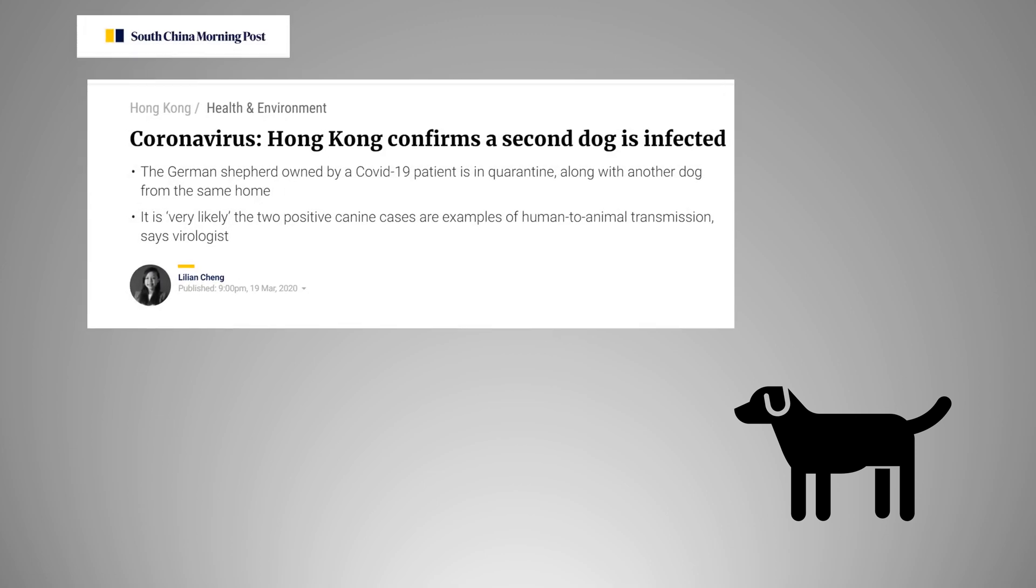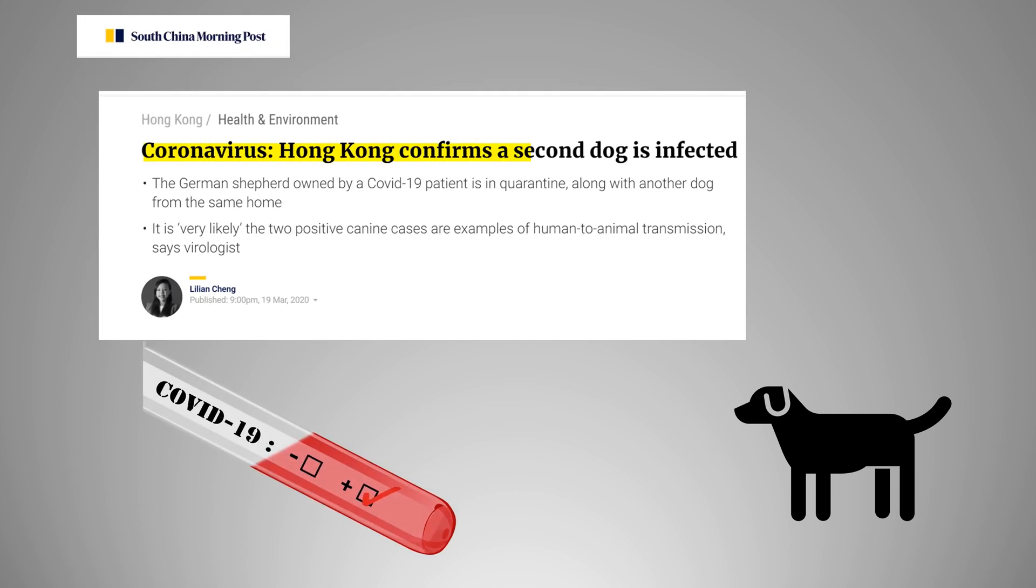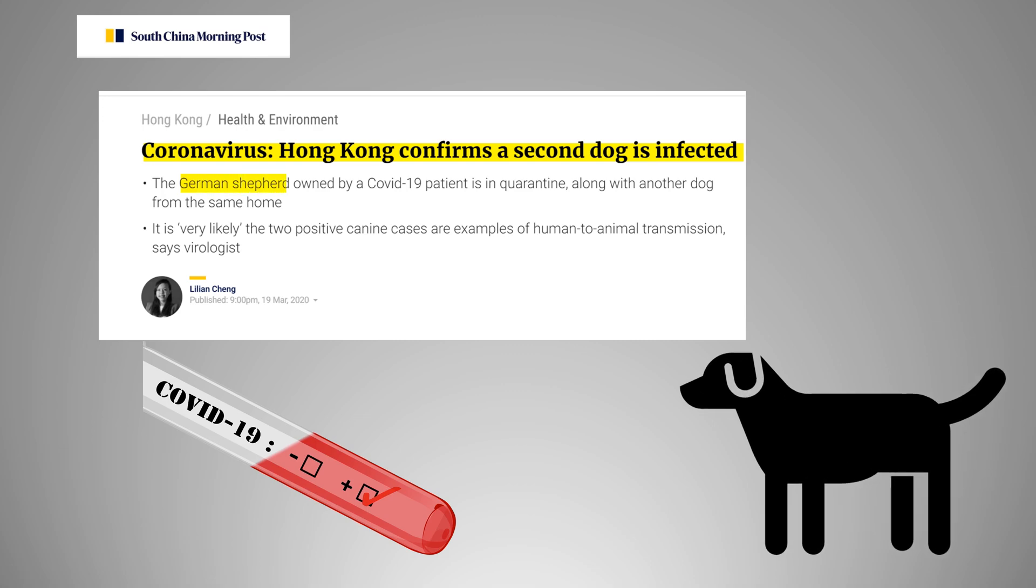South China Morning Post claimed a few days ago that Hong Kong confirmed the second case of coronavirus in a dog. The dog is reported to be a German Shepherd. The virologist believes that the two cases are an example of human-to-animal transmission and not from animals to humans.